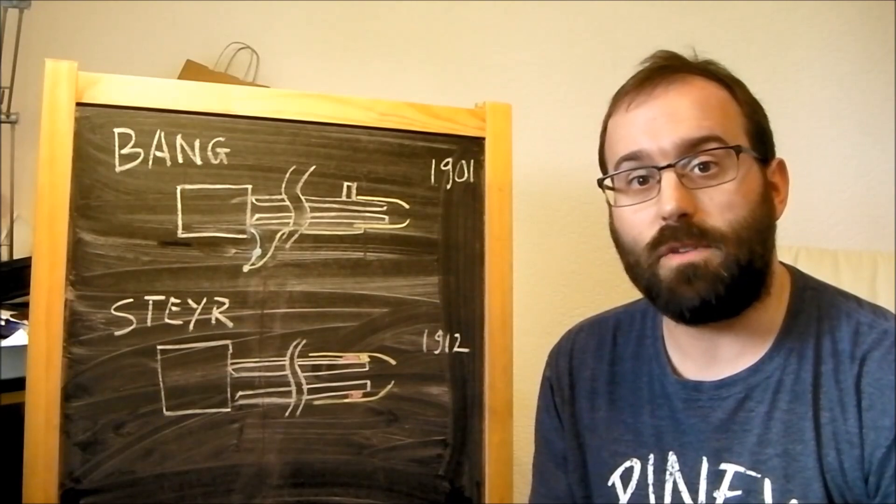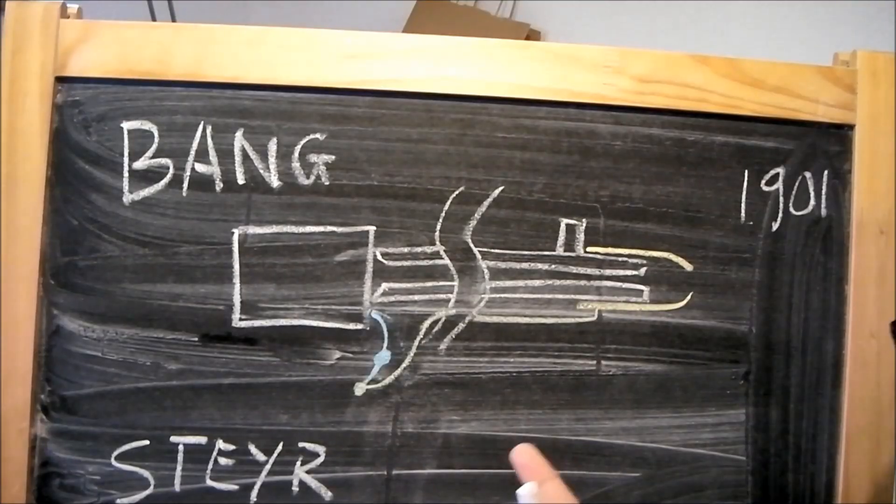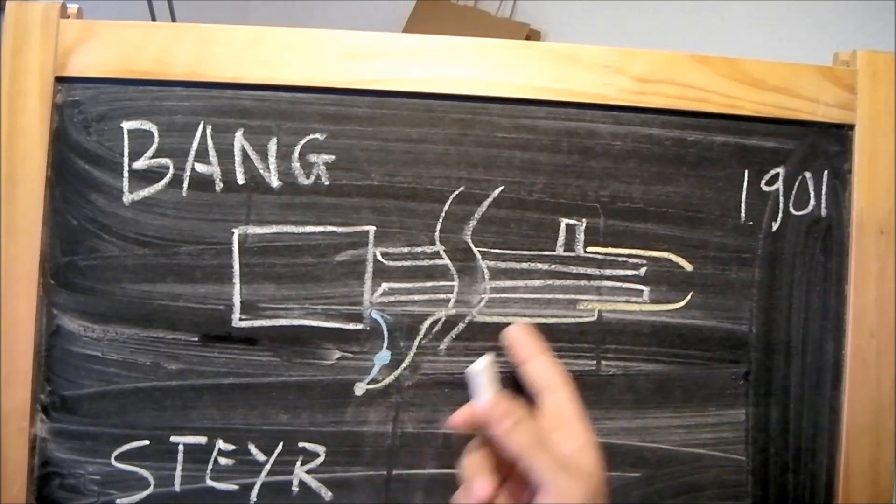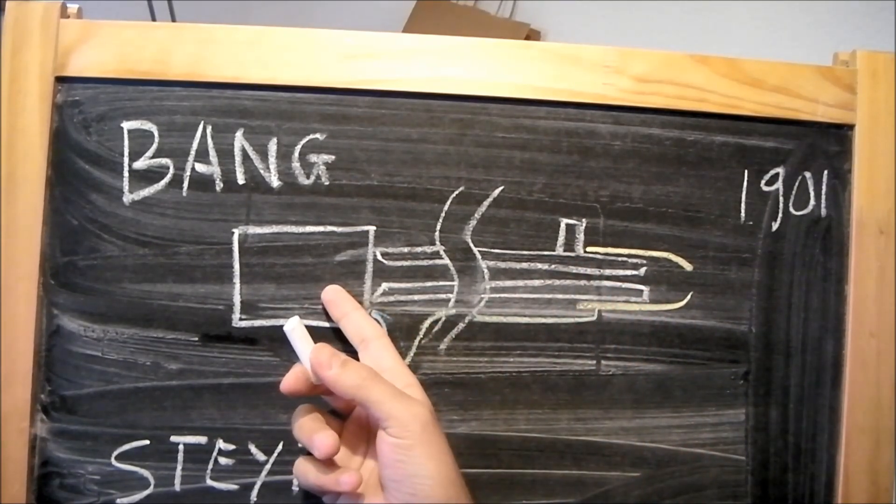Now let's bring the camera in closer and have a look at how they differ. Now let's look first at the Bang type system. I've done this very schematically and in white we have the barrel and we have the breech block.